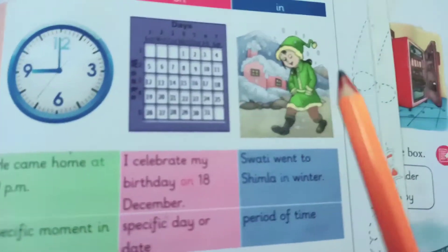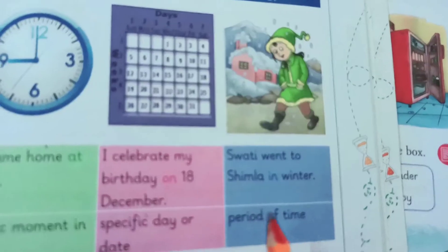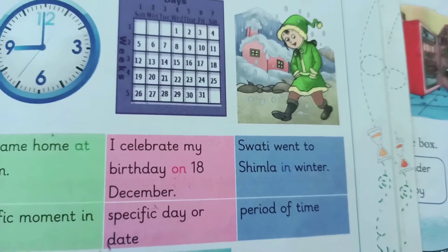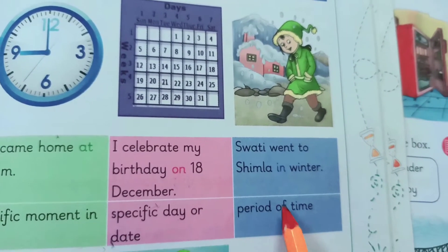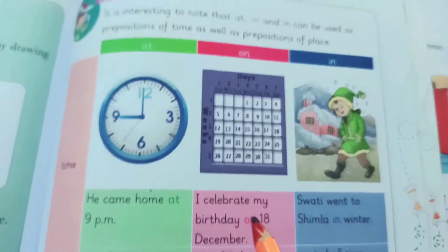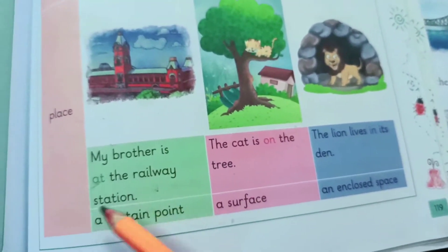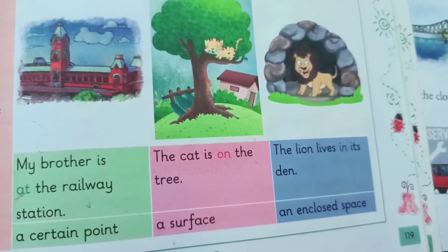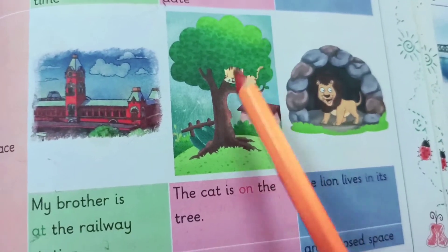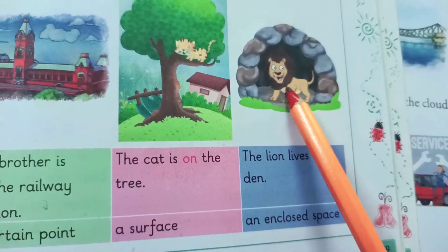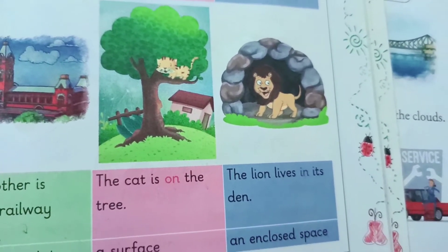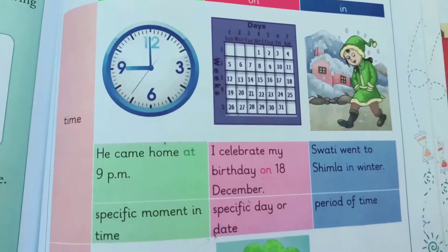We use 'in' when we speak about a longer period of time. For example: Swati went to Shimla in winter. We also use 'at' for a certain point or location — for example: My brother is at the railway station. 'On' is used when something is on a surface: The cat is on the tree. 'In' is used for enclosed spaces: The lion lives in its den.